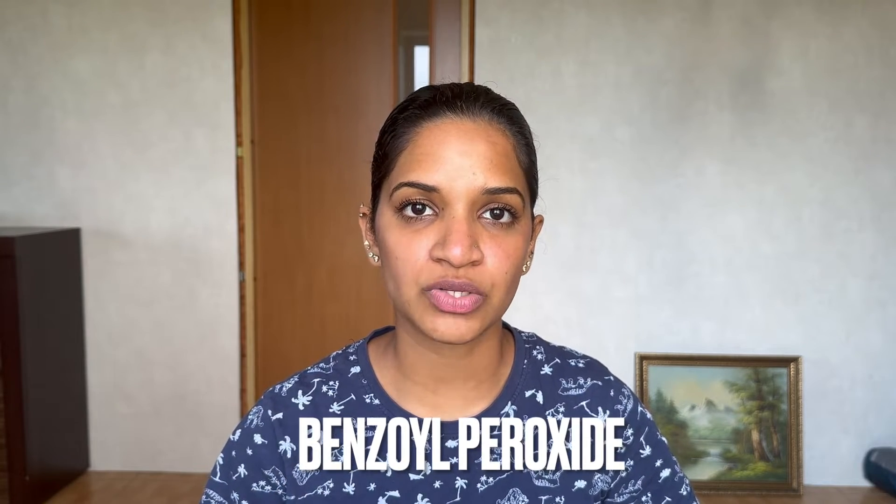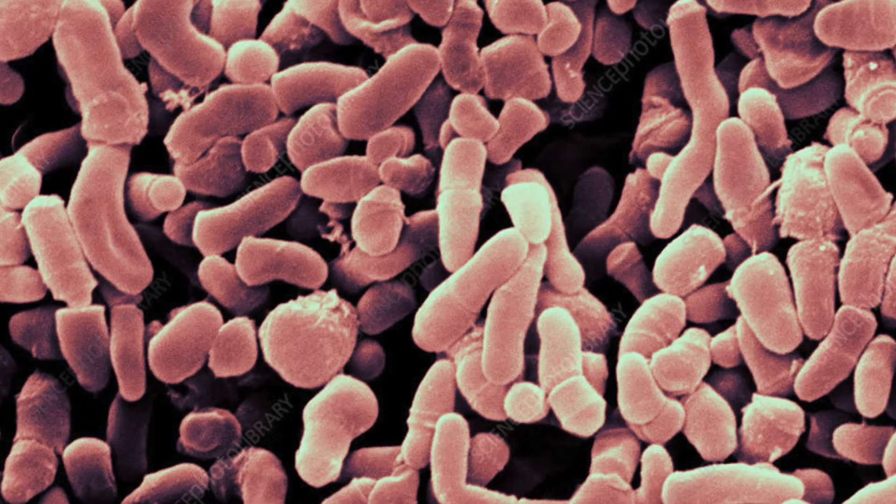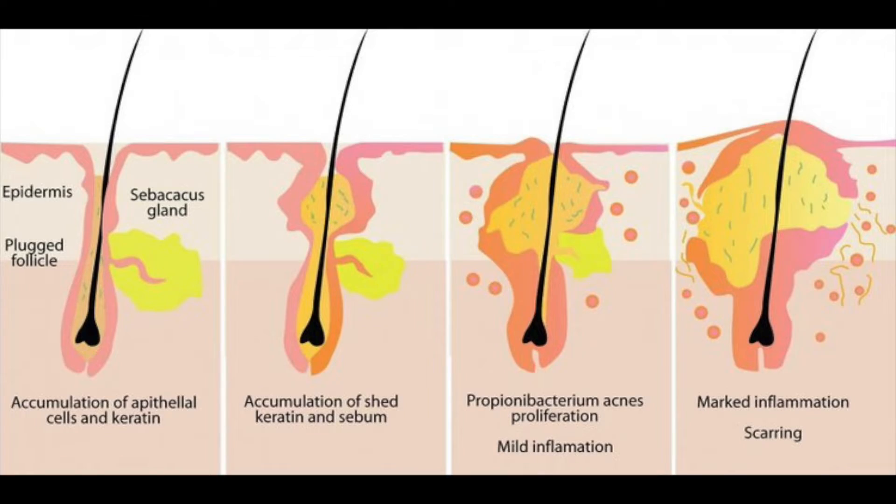Now, what is benzoyl peroxide? Benzoyl peroxide is a counter-treatment ingredient that actually targets the Propionibacterium acnes, which causes acne on the skin. These bacteria cause inflammatory acne, which leads to redness and aggressive acne marks on the skin. Benzoyl peroxide hinders or stops the growth of this bacteria. Being an organic acid, it targets the Propionibacterium acnes by introducing oxygen into the skin, which actually kills the bacteria, and it helps with reducing the redness and inflammation present on the acne or pimples.